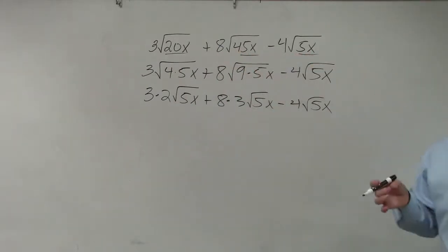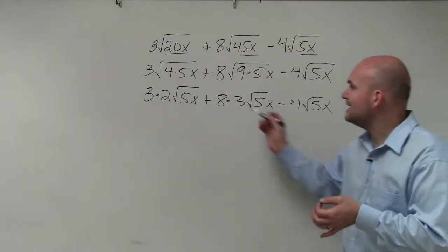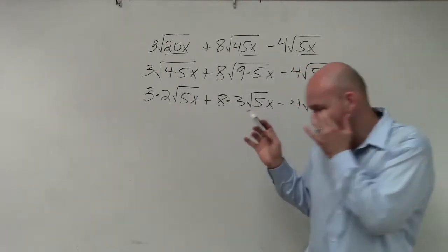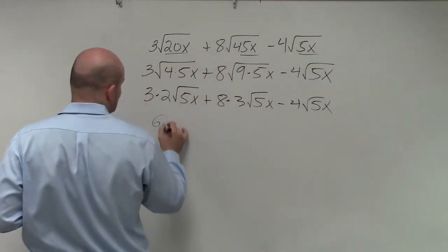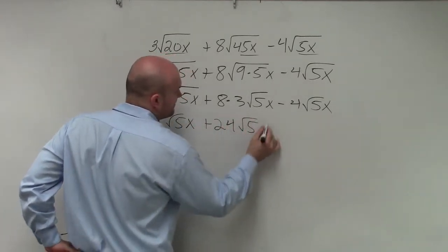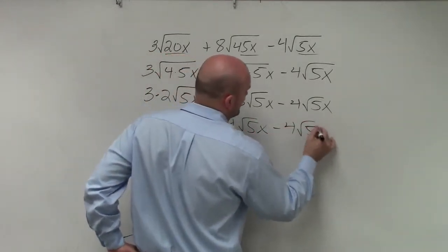So what I did was I took the square root of each of my squared terms and now you've got to see that those numbers on the outside are being multiplied by each other. So 3 times 2 is 6 square root of 5x plus 24 square root of 5x minus 4 square root of 5x.